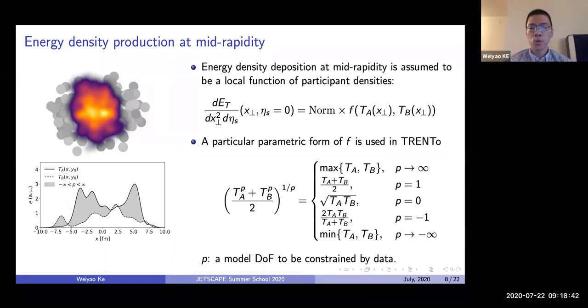Of course, usually we don't think p should really take minus infinity to infinity. In that sense, you are only using one of the information from T_A and T_B. A more realistic prior, also suggested by earlier study, is actually p from minus one to one, which is shown in this blue range. It's not that uncertain compared to the full range labeled by gray color, but still you'll see by varying p from minus one to one, you get some significant uncertainty in how the geometry at mid-rapidity looks like.